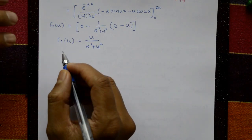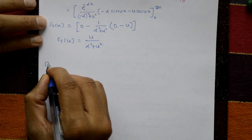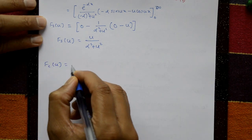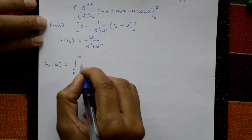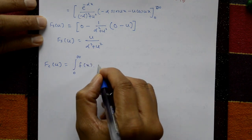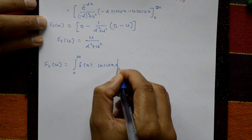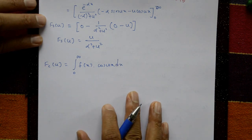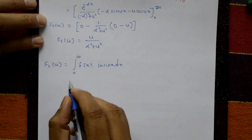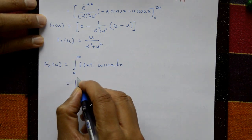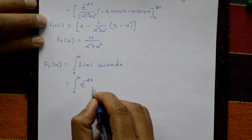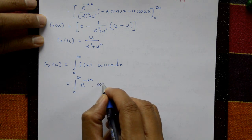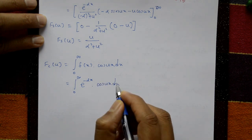Now next is the cosine transform. fc(u) is equal to the integration from 0 to infinity of f(x) into cos(ux) with respect to x. Here f(x) is e to the power minus alpha x, so we integrate e to the minus alpha x into cos(ux) with respect to x.